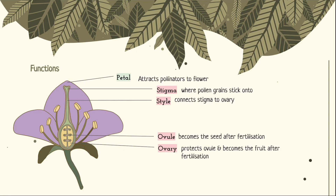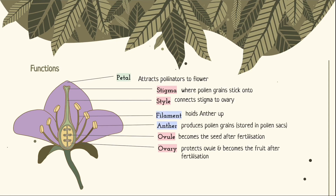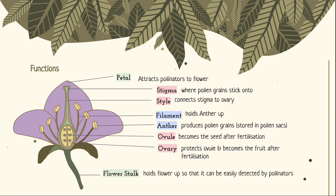Moving on to the male parts: the filament holds the anther up, and the anther produces pollen grains which contain the male reproductive cells and stores them in a pollen sac. Finally, the flower stalk holds the flower up so that pollinators can see it.